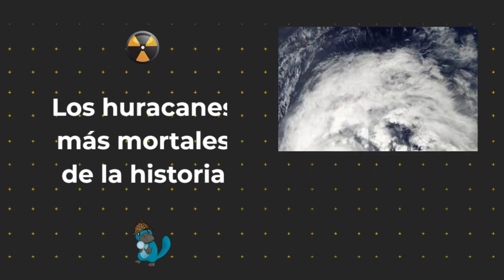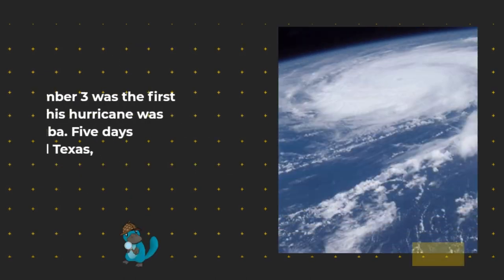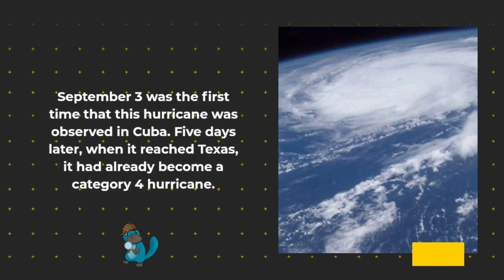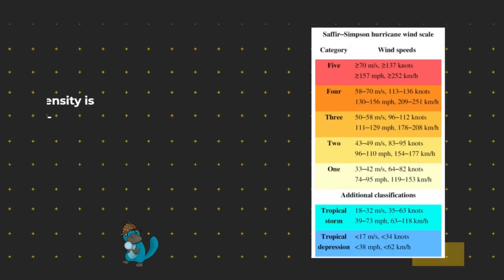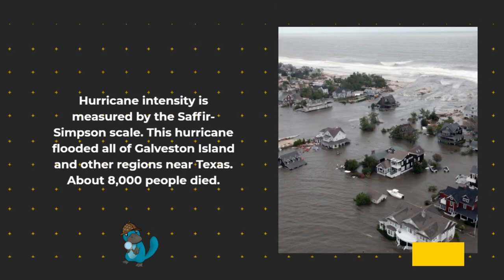The Deadliest Hurricanes in History. Galveston, United States: September 3rd was the first time this hurricane was observed in Cuba. Five days later, when it reached Texas, it had already become a category 4 hurricane. Hurricane intensity is measured by the Saffir-Simpson scale. This hurricane flooded all of Galveston Island and other regions near Texas, and about 8,000 people died.